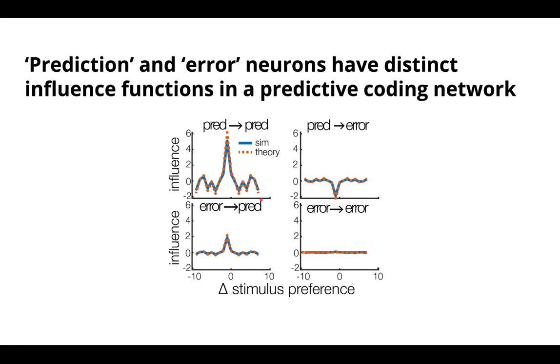We also look at predictive coding networks that have dynamically coupled subpopulations of prediction neurons and error neurons. And we describe a set of influence functions with precise quantitative interrelations.